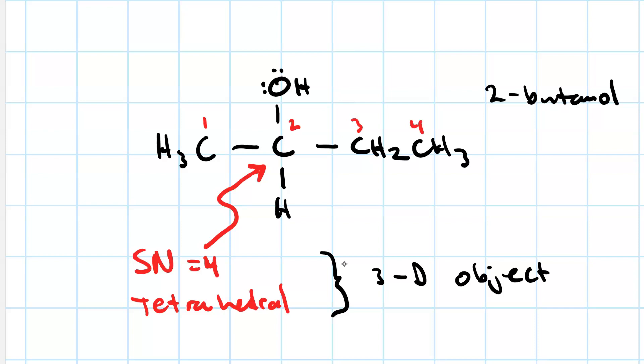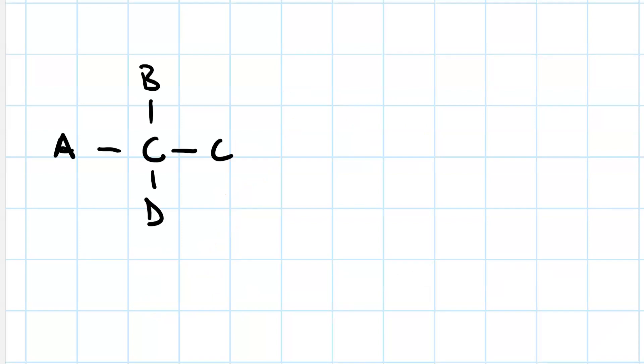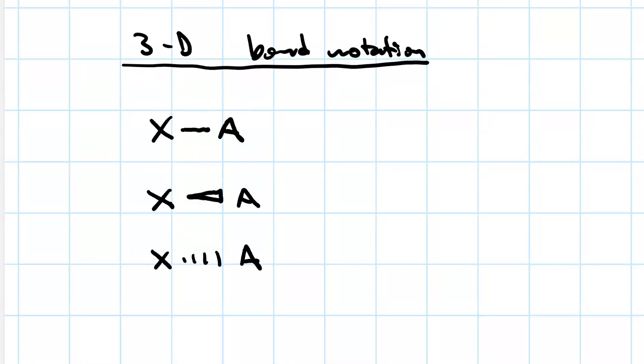So really we need to draw this differently, and we need to introduce some new notation. Here is our 3D bond notation. In the first case, we have a flat bond. That means the bond between X and A is in the plane of the paper.